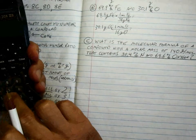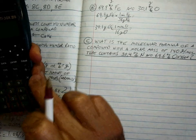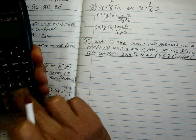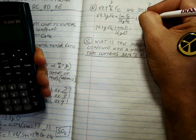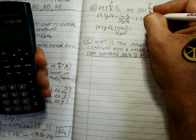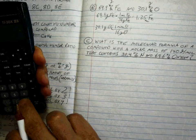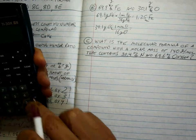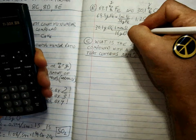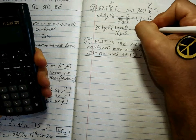69.9 divided by 56 gives me 1.25 Fe. That's the moles. And 30.1 divided by 16 is 1.88 moles of O.